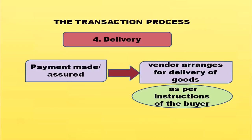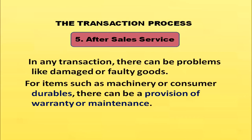In certain cases, debit cards can also be used for payment, and payments can also be made by checks sent by post. The next stage is delivery — once payment is assured, the vendor arranges for delivery of goods as per the buyer's instructions. The fifth transaction process is after-sale service. In any transaction there can be problems like damaged or faulty goods, and for items such as machinery and consumer durables, there can be a provision of warranty or maintenance.